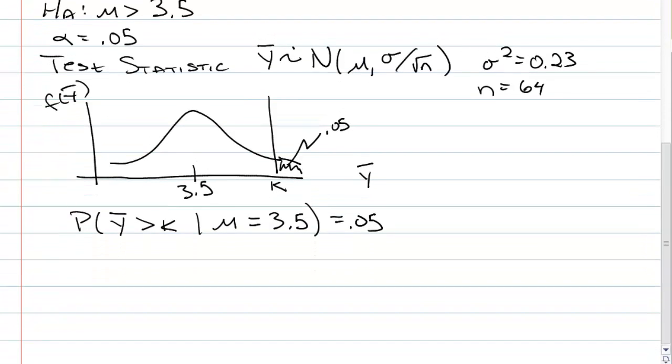If you use a software package such as R, you calculate that. qnorm, we want the area to the left. The area to the right is 5%, the area to the left is 95%. Under the null, our mean is 3.5, standard deviation 0.23 over square root of 64. And that gives us the value of 3.60.